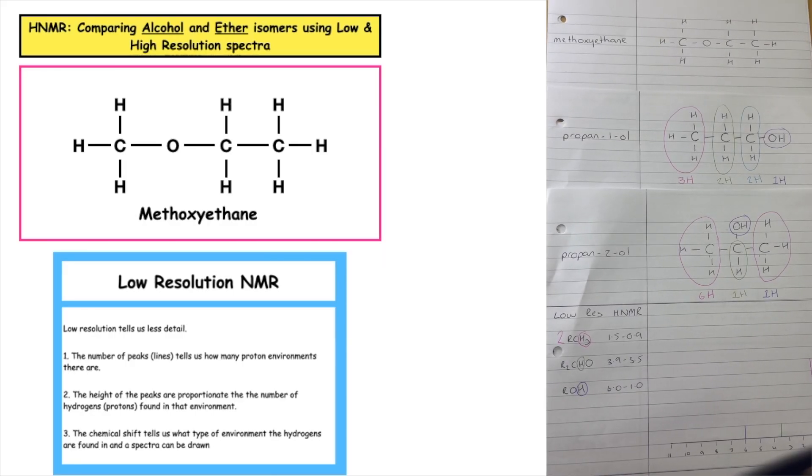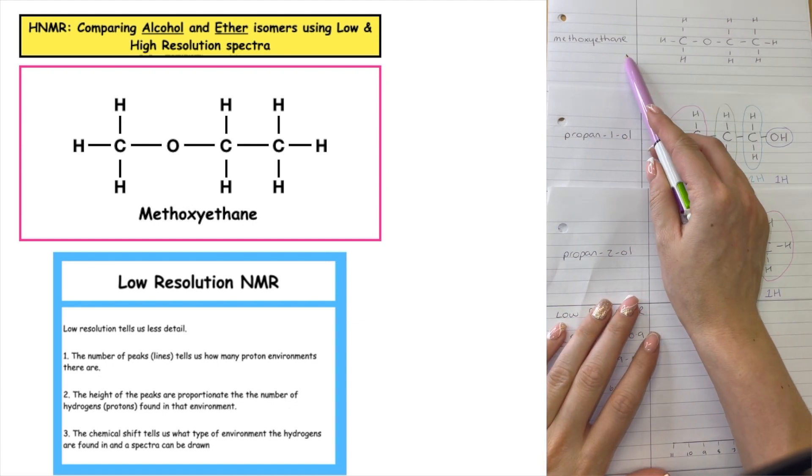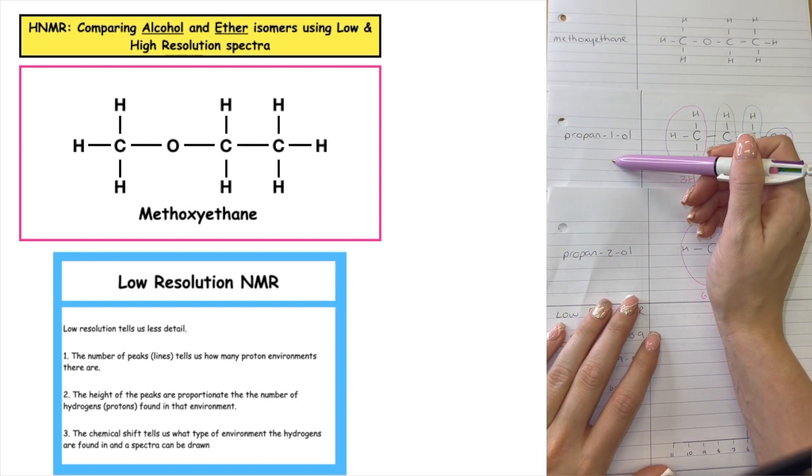Today's video is linked to previous videos looking at examples of propane-1-ol and propane-2-ol. Today we're focusing on ethers, which is an organic family that is an isomer of alcohols.